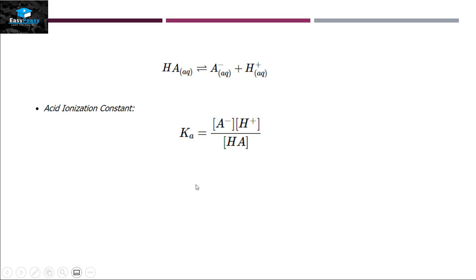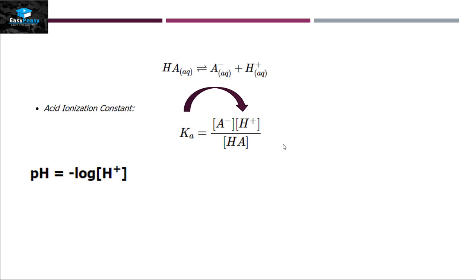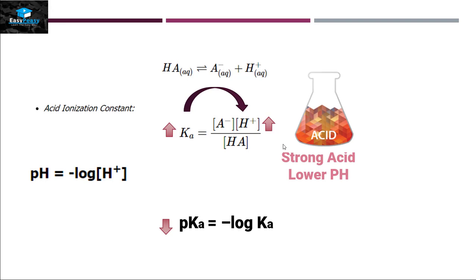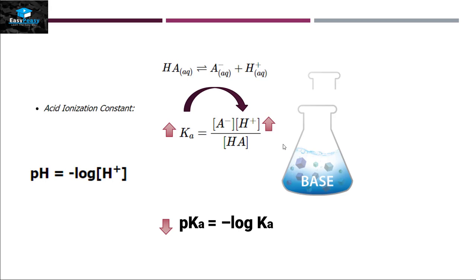For a two-way reaction we need the acid ionization constant, represented as Ka, which equals the concentration of products divided by reactants. Ka is directly proportional to H⁺ ion concentration — the higher the Ka, the higher the H⁺ concentration and the stronger the acid. Since pH is the negative log of H⁺ ion concentration, pKa equals the negative log of Ka. A higher Ka means a lower pH, indicating a stronger acid.